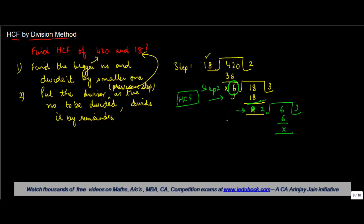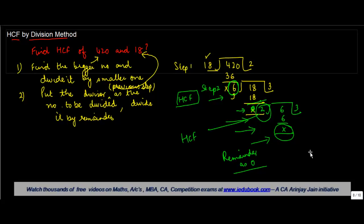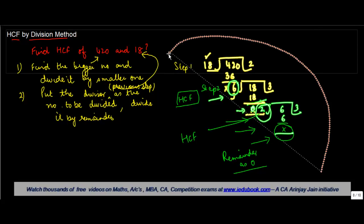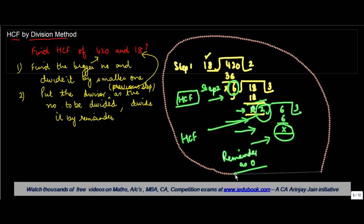So, you keep on following these steps of making the divisor of the previous step as the number itself unless and until you get the remainder as 0. And once that is done, whichever is the last divisor, that is the HCF. Let me take another example to explain this concept better.